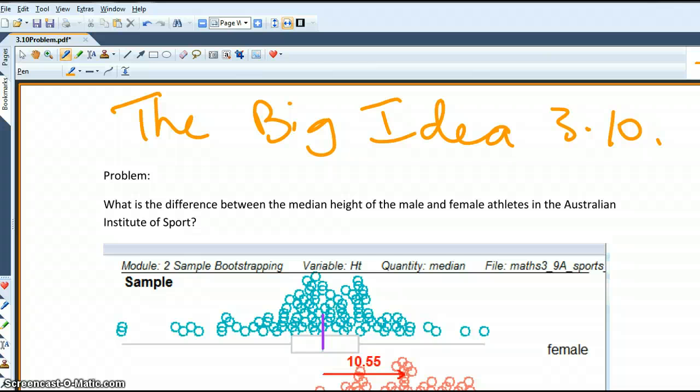The big idea in 3.10 is that you're looking at the difference between two groups. So here we've got males and females, there's only been two. You're looking at quantifying that difference. So it's not who's the winner, who's bigger, who's faster. You're actually looking at a value for that difference.